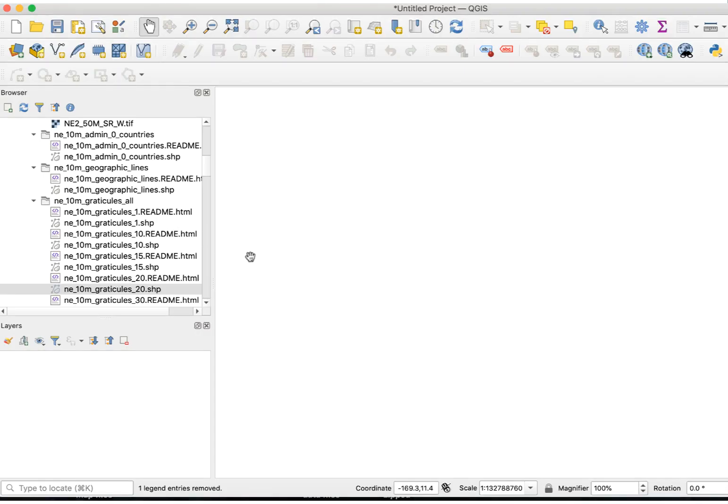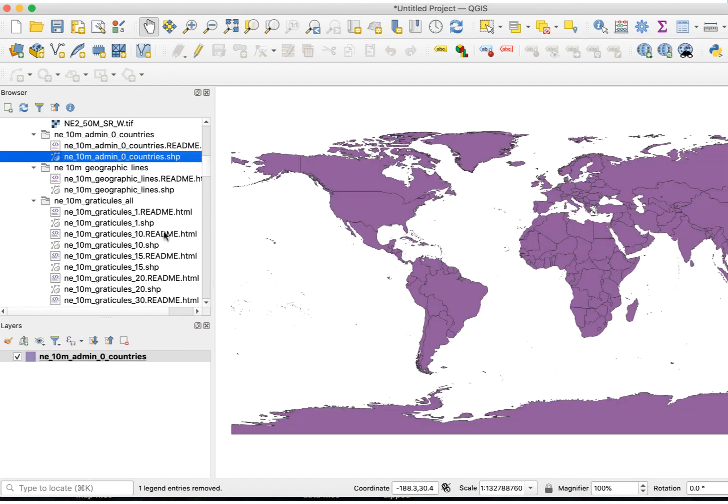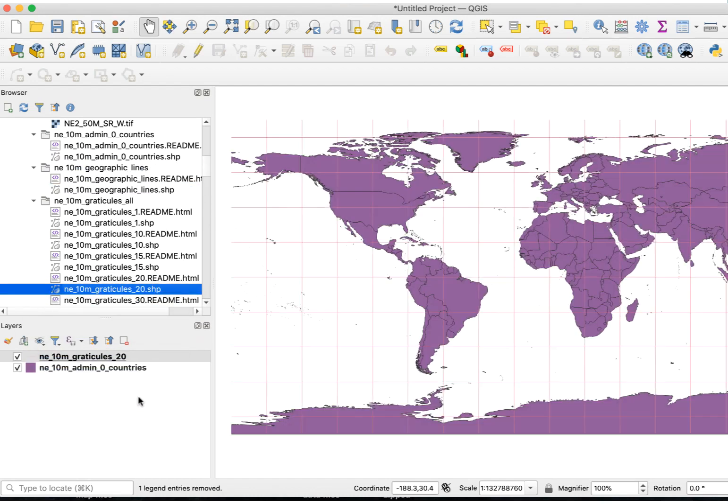Now I'll go to QGIS and add the Countries layer, and also one of the Graticules layers. These are optional, but I think they improve the look of ortho projections. Our map is now in the default WGS84 projection. Once we have the data in place, we can move on to the projection.